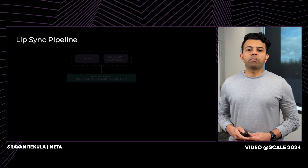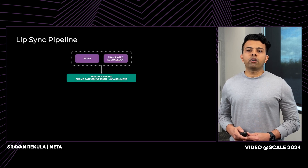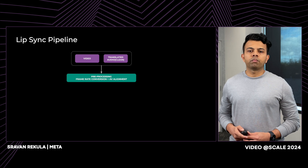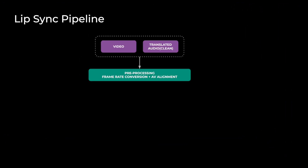In this slide, I'll break down the key components of lip sync and walk through the step-by-step workflow. As a first step, the translated audio from the voice model and original video is pre-processed for frame conversion and AV sync alignment, to ensure the translated audio and video generated by the lip sync model are perfectly aligned.